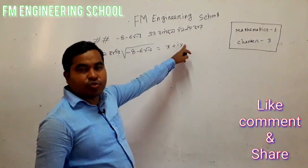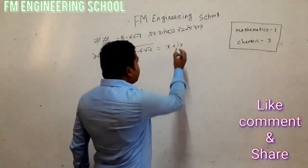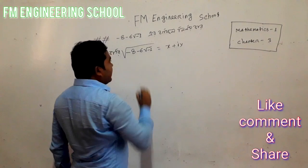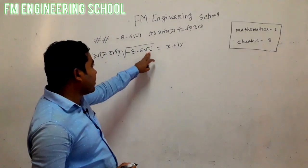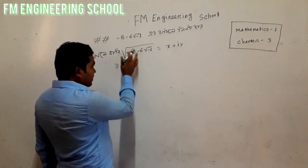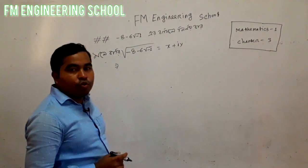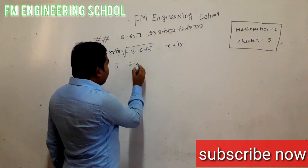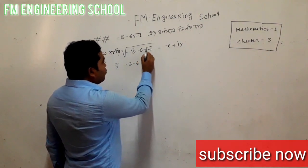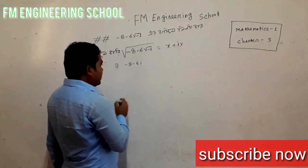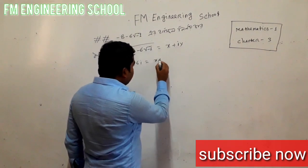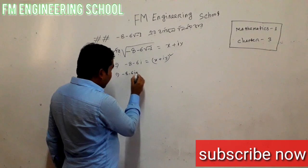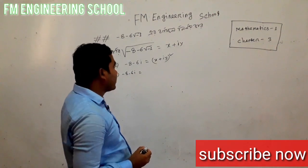We let the square root equal x plus iy. I will write the bottom line: the result is minus 8 minus 6i. So we have x plus iy squared equals minus 8 minus 6i.